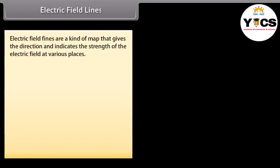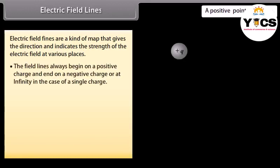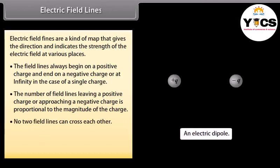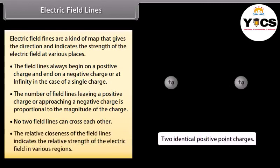Electric field lines are a kind of map that gives the direction and indicates the strength of the electric field at various places. Field lines always begin on a positive charge and end on a negative charge or at infinity. The number of field lines is proportional to the magnitude of the charge. No two field lines can cross each other, and the relative closeness of field lines indicates the relative strength of the electric field.